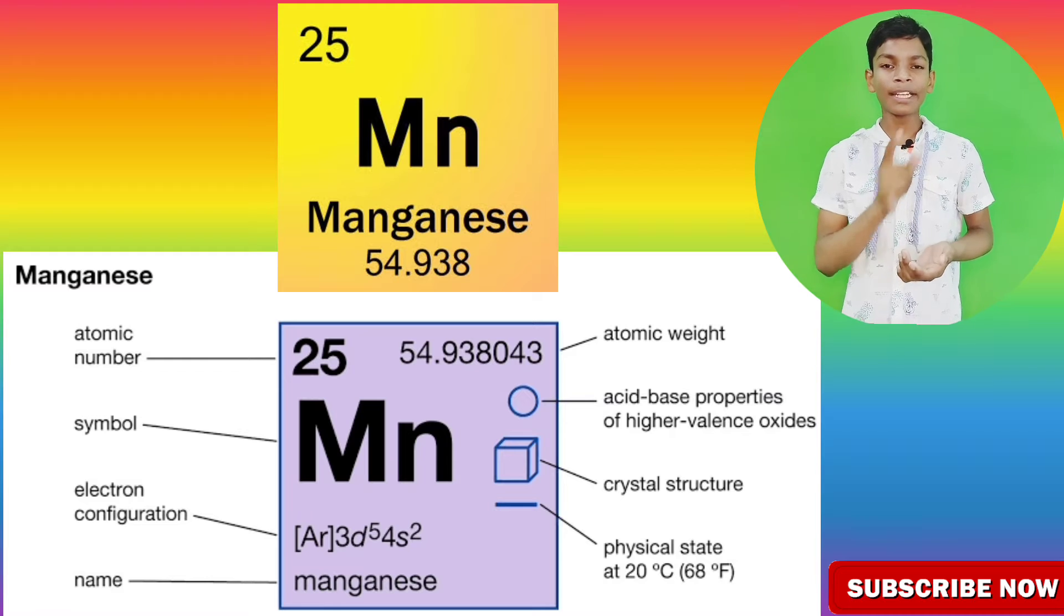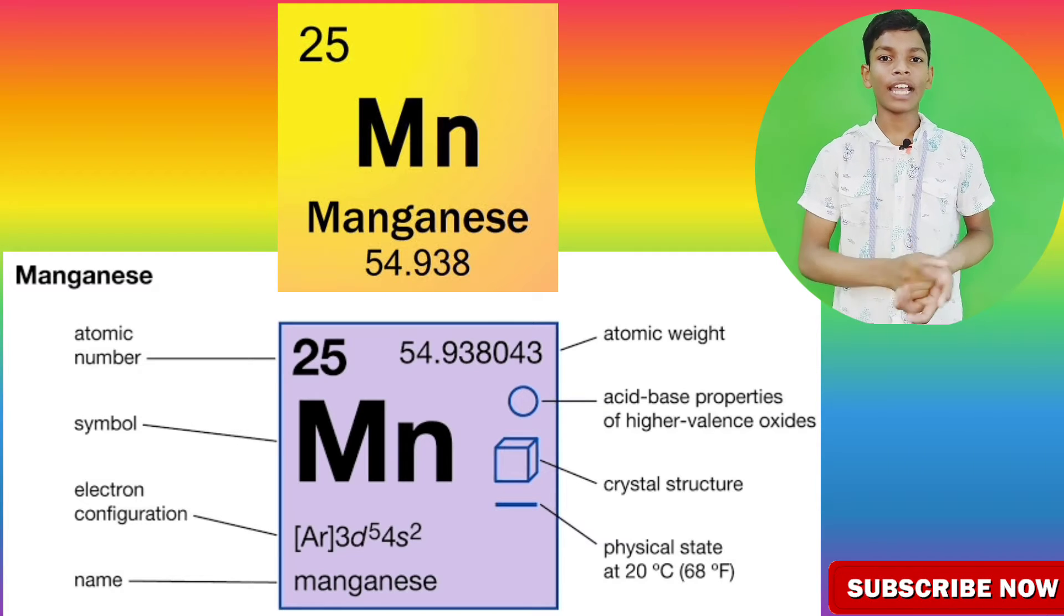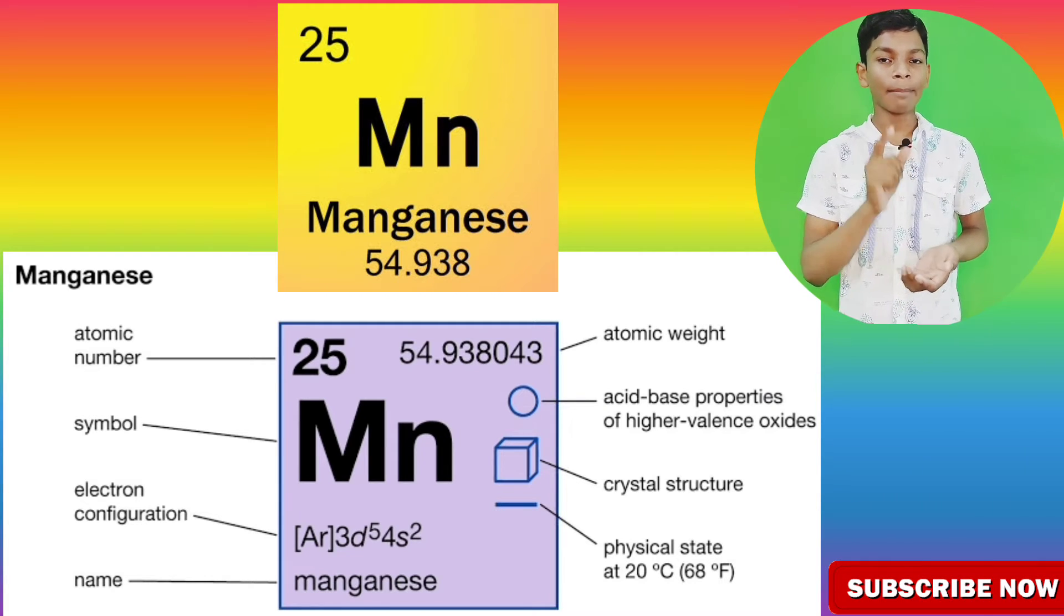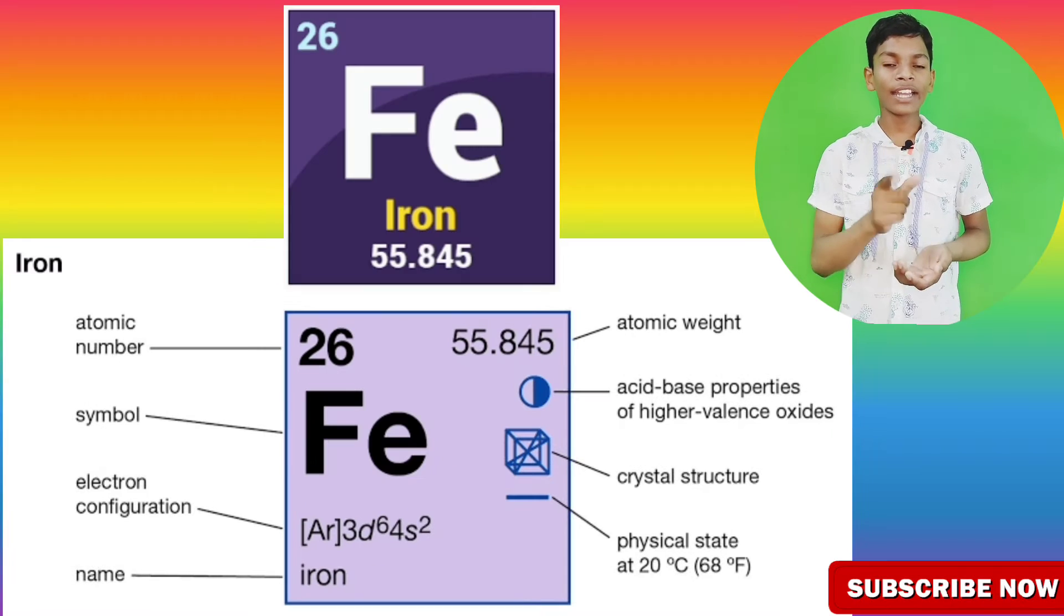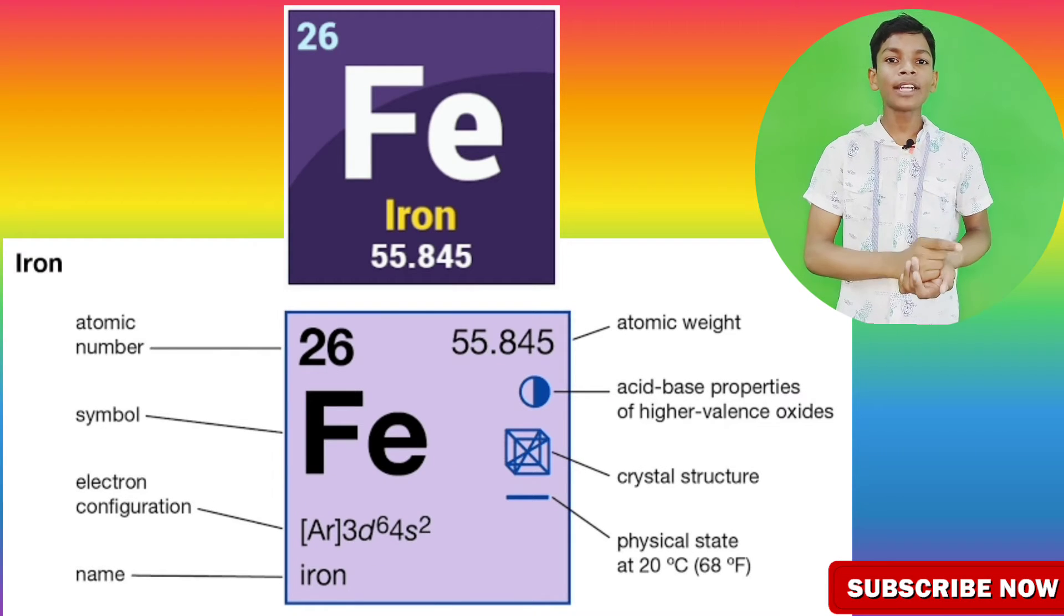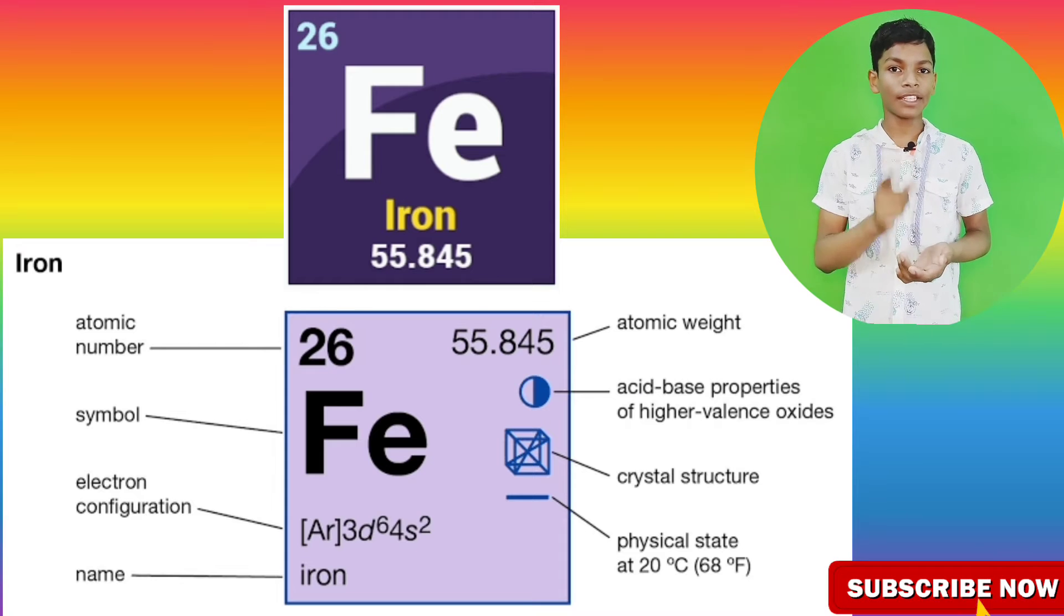Manganese: atomic number 25 and symbol Mn. Iron: atomic number 26 and symbol Fe.